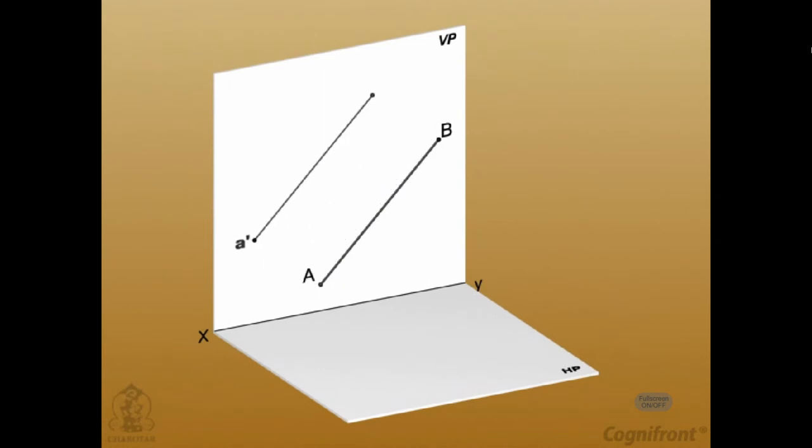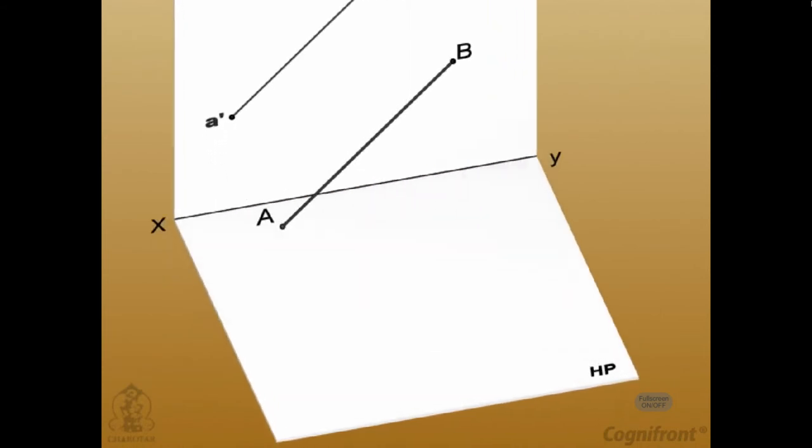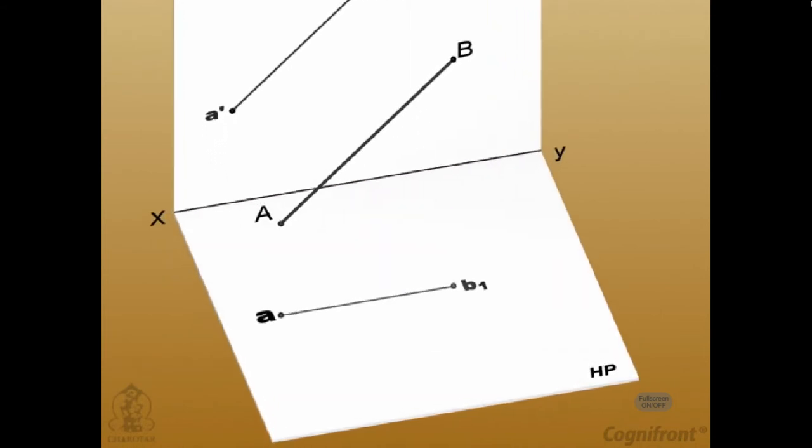Observe its front view. A-B-1 on VP gives the true length and the inclination with XY. The top view is a shorter line AB1 parallel to XY.